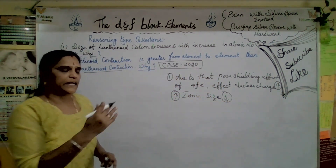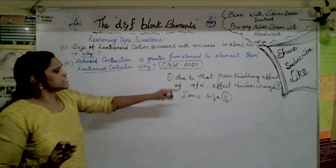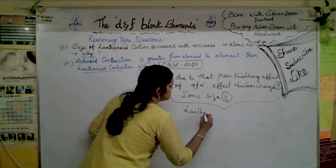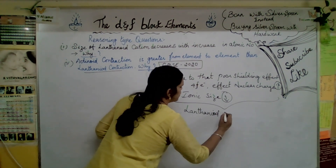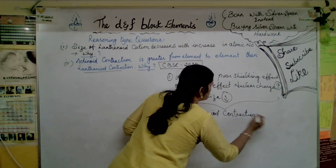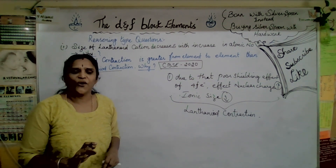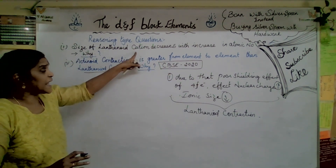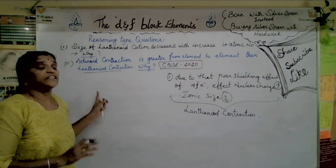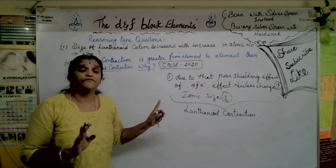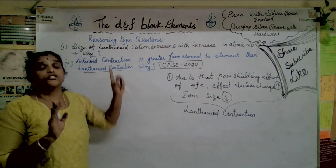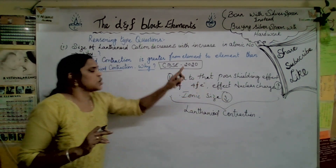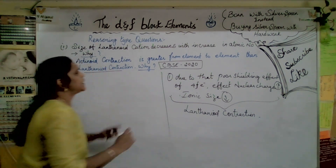Effective nuclear charge increases (up arrow) and ionic size decreases (down arrow). This phenomenon is called lanthanoid contraction. They may ask it directly - what do you mean by lanthanoid contraction? - or indirectly. The size of lanthanoid cation decreases with increase in atomic number due to the poor shielding effect of 4F electrons, which belong only to lanthanoids.